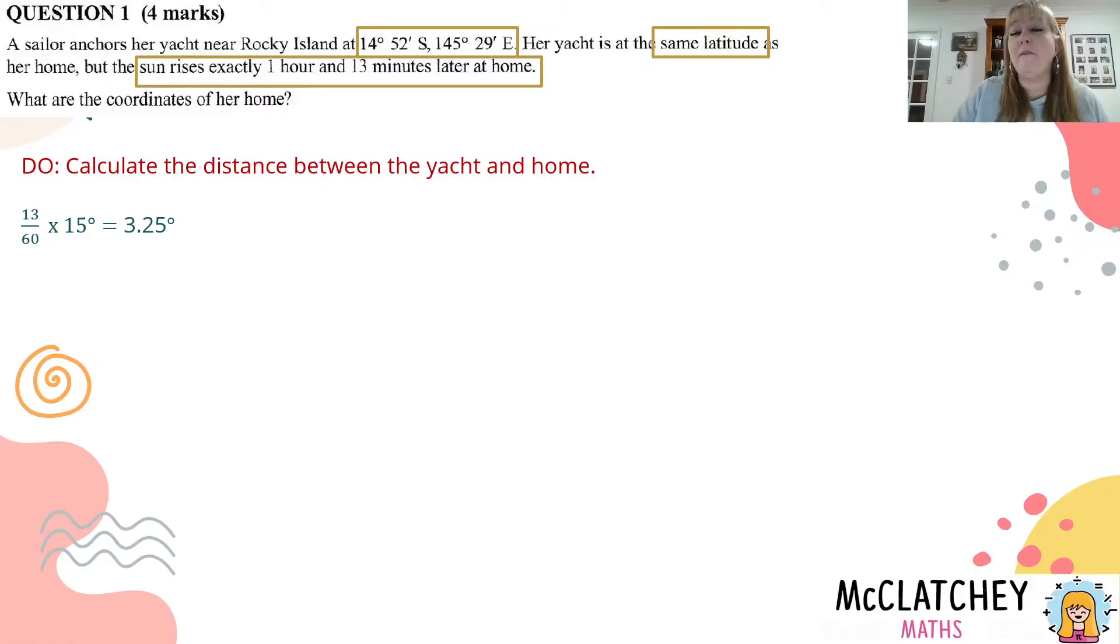So we can work out what fraction of an hour that is: 13 divided by 60, and if we multiply that by 15 degrees we get 3.25 degrees. If we add those two together now - the hour plus the 13 minutes is 15 degrees and the fraction is 3.25 degrees - that gives us 18.25 degrees west of the yacht. That's where her home is.